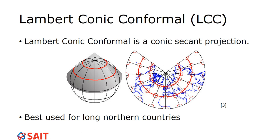I'm going to leave it at that because I do want you to watch the video. I don't want to review too much of the information here, and it allows me to see who has actually done their homework. That covers the Universal Transverse Mercator and the Lambert Conic Conformal. We'll be getting into objective 7.7 next.